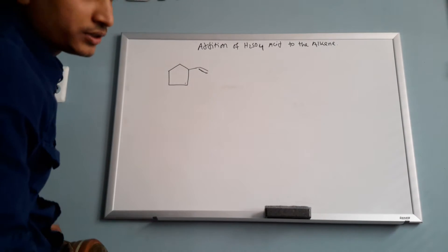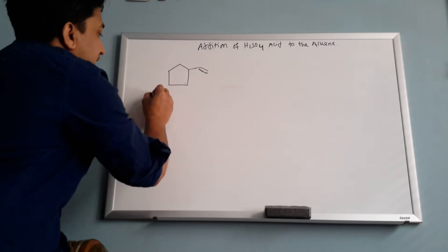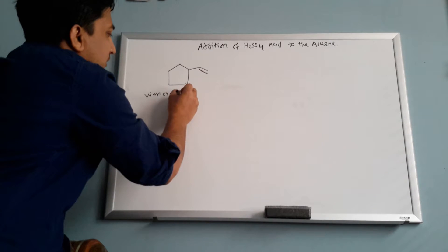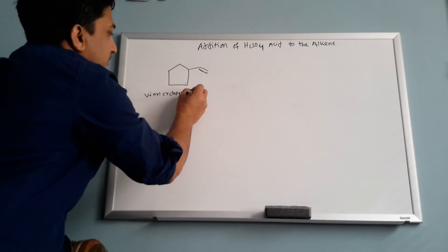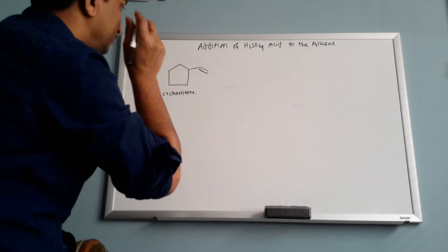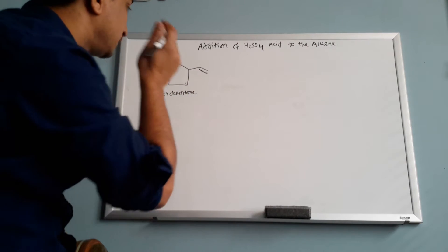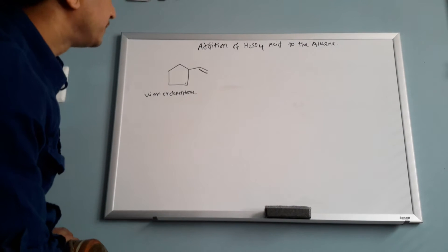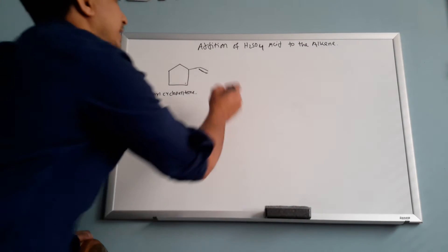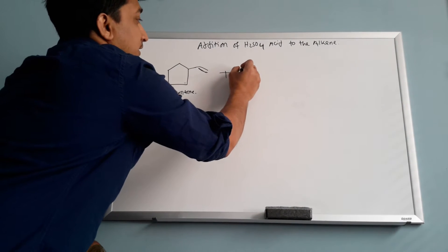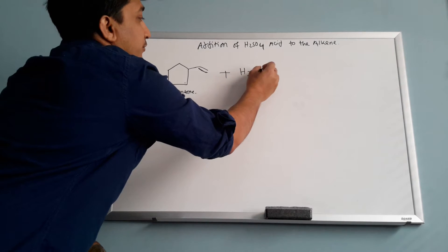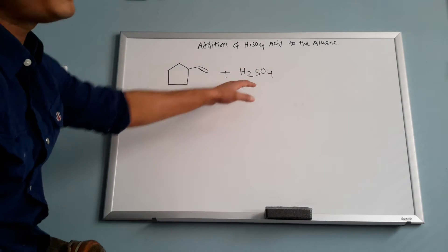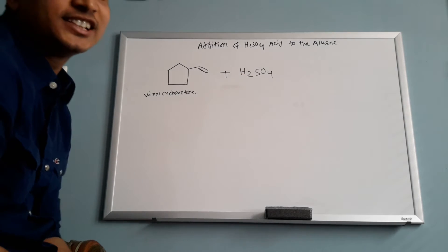For example, if you have this molecule — the name of this one is vinyl cyclopentene. And you want to do the mechanism with addition of sulfuric acid. Sulfuric acid is H2SO4.